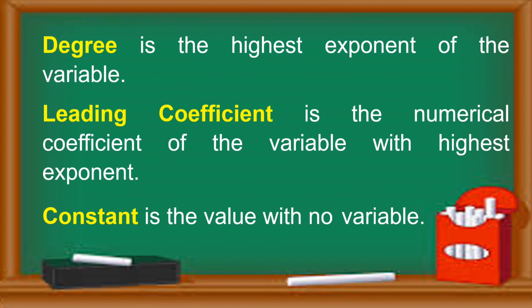This time, let's work on with the degree, leading coefficient, and constant term. The degree is the highest exponent of the variable. The leading coefficient is the numerical coefficient of the variable with the highest exponent. And the constant term is the value with no variable.